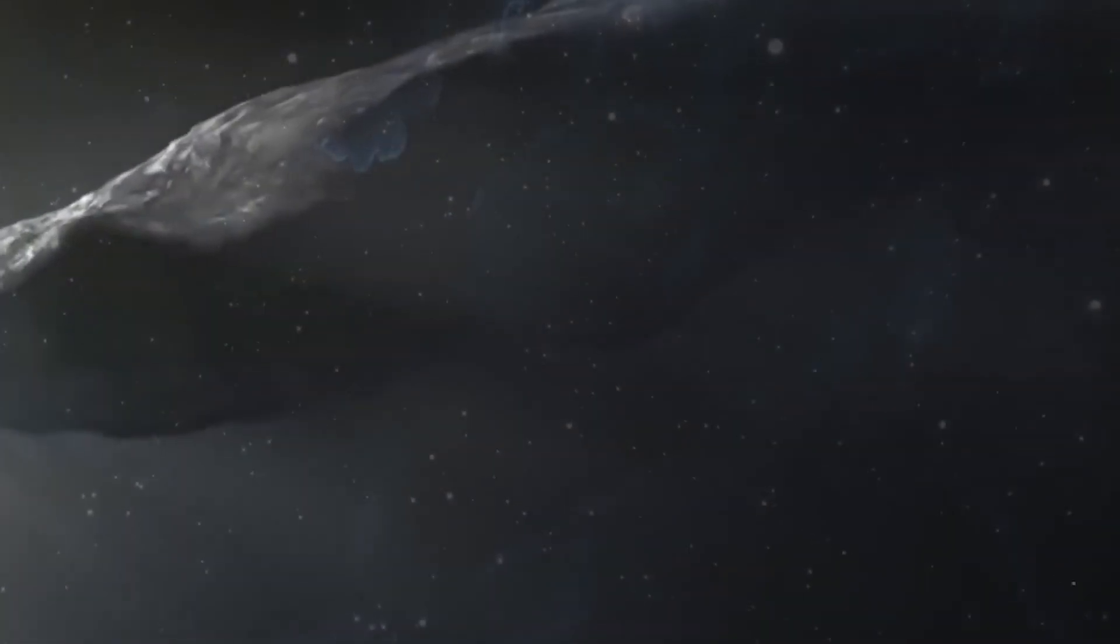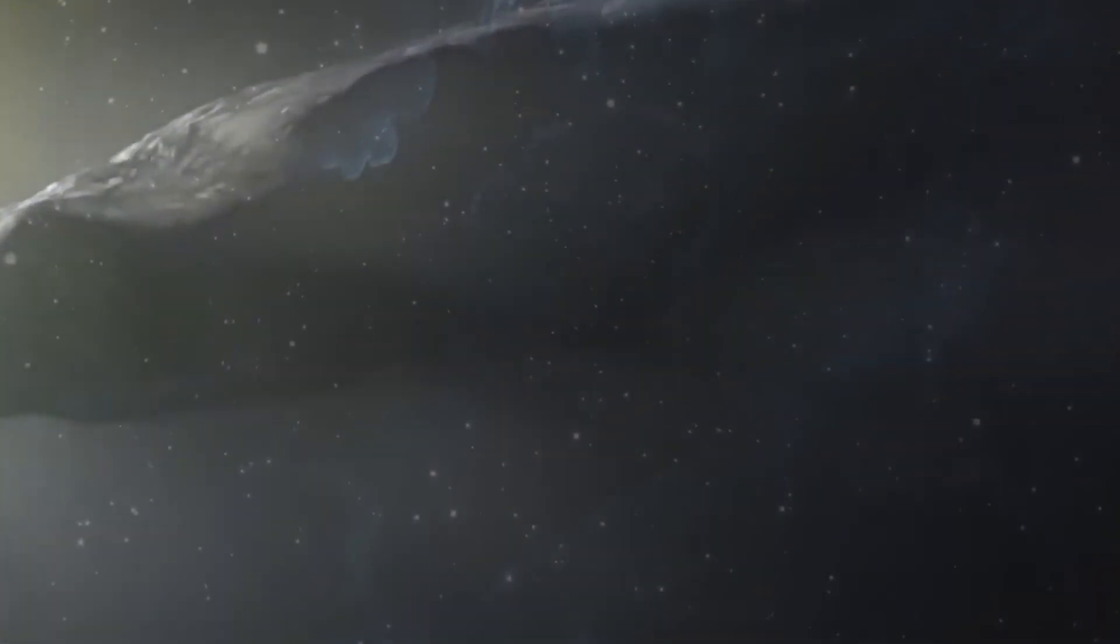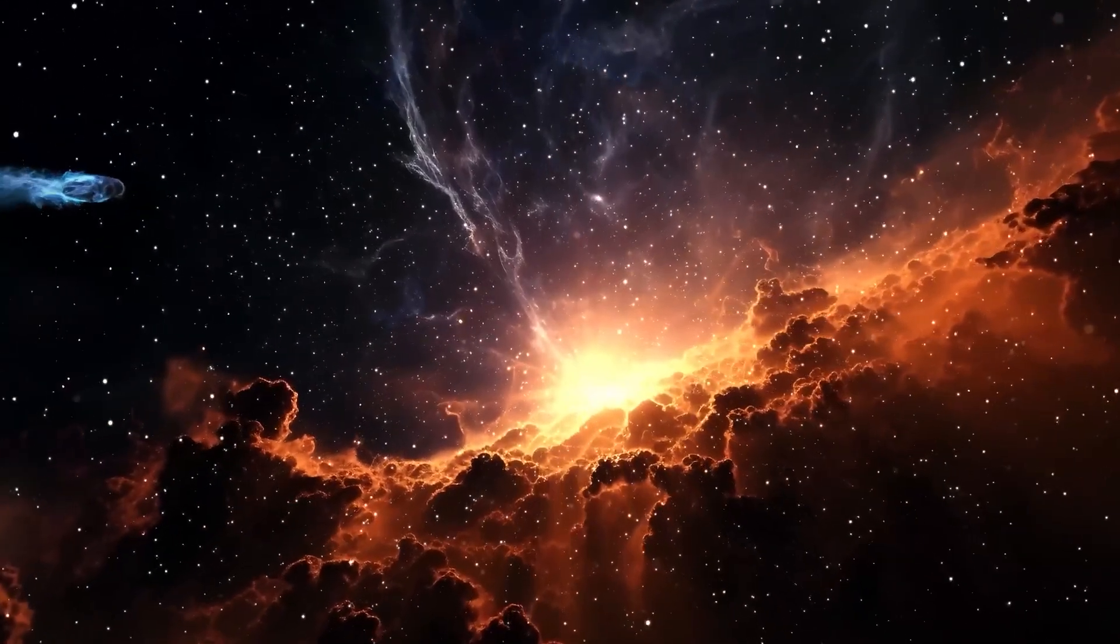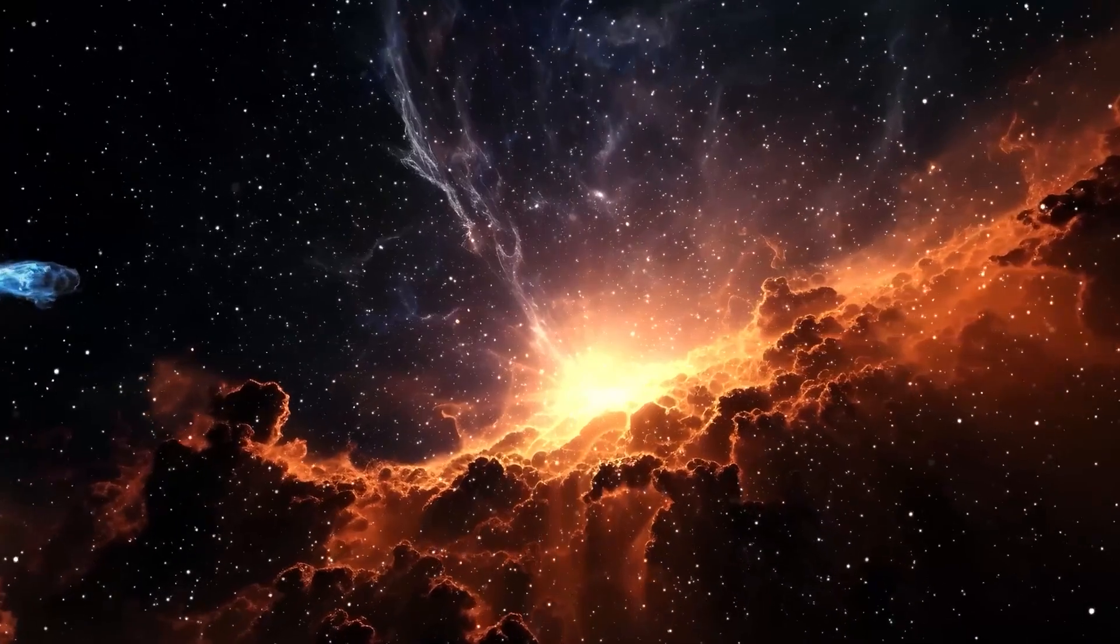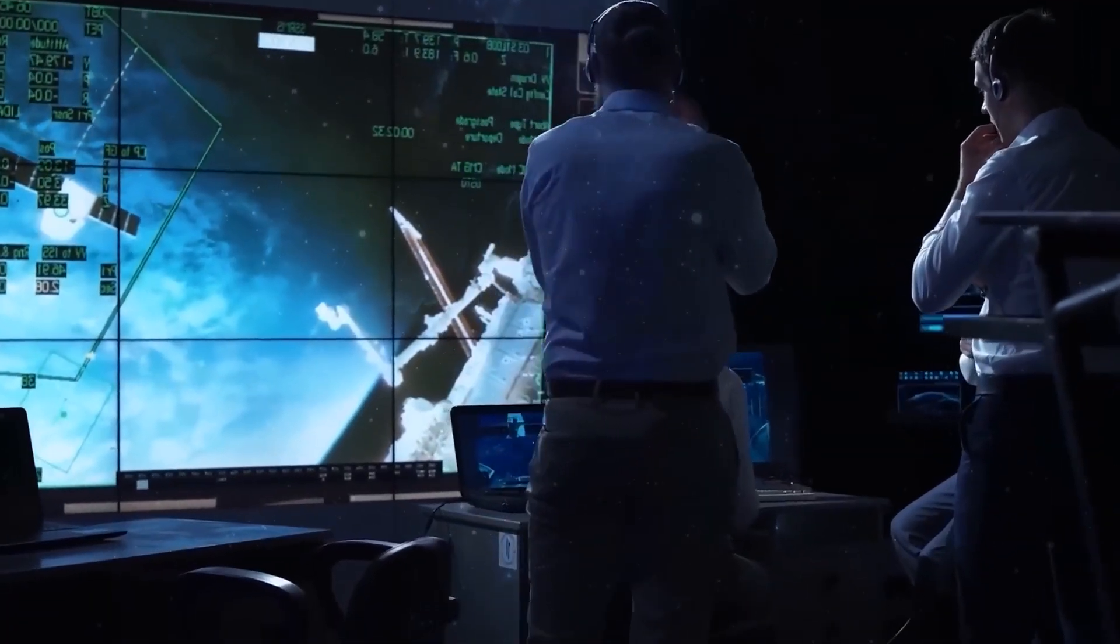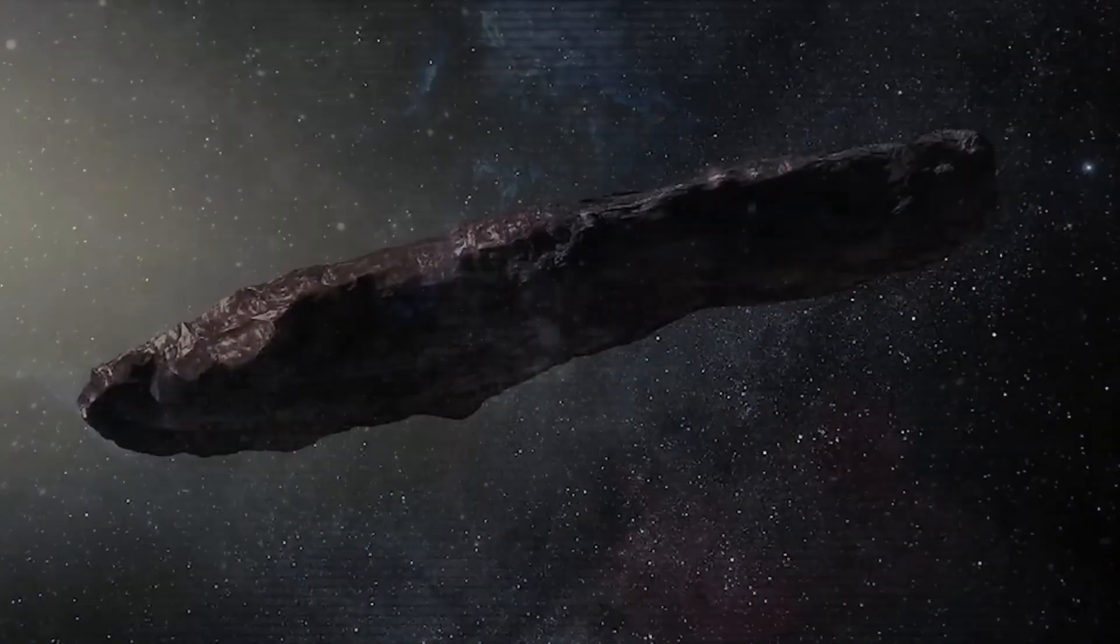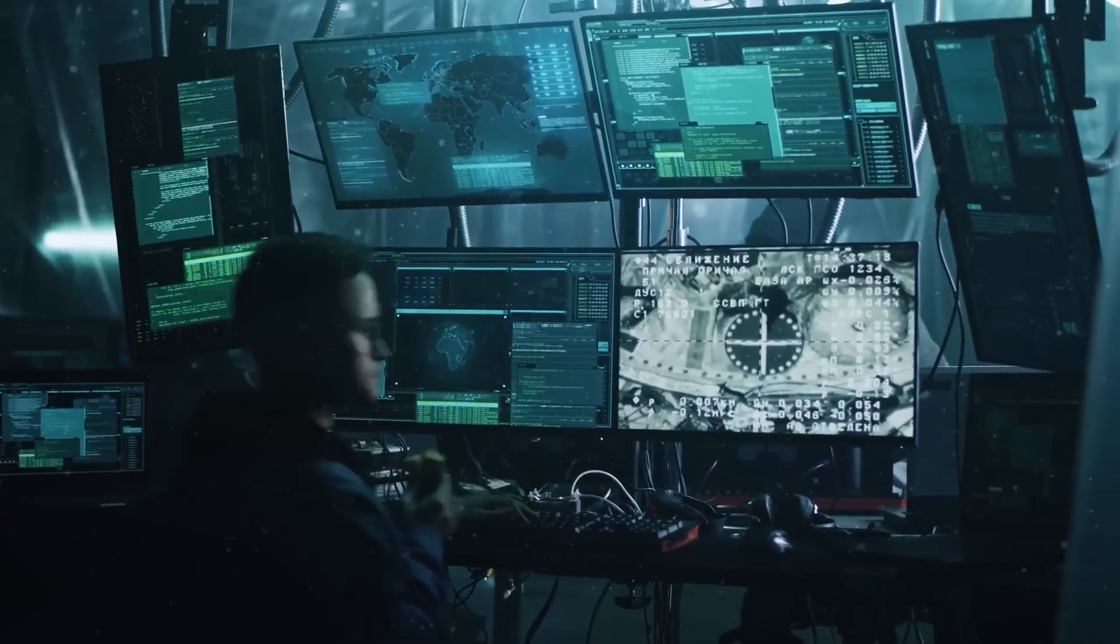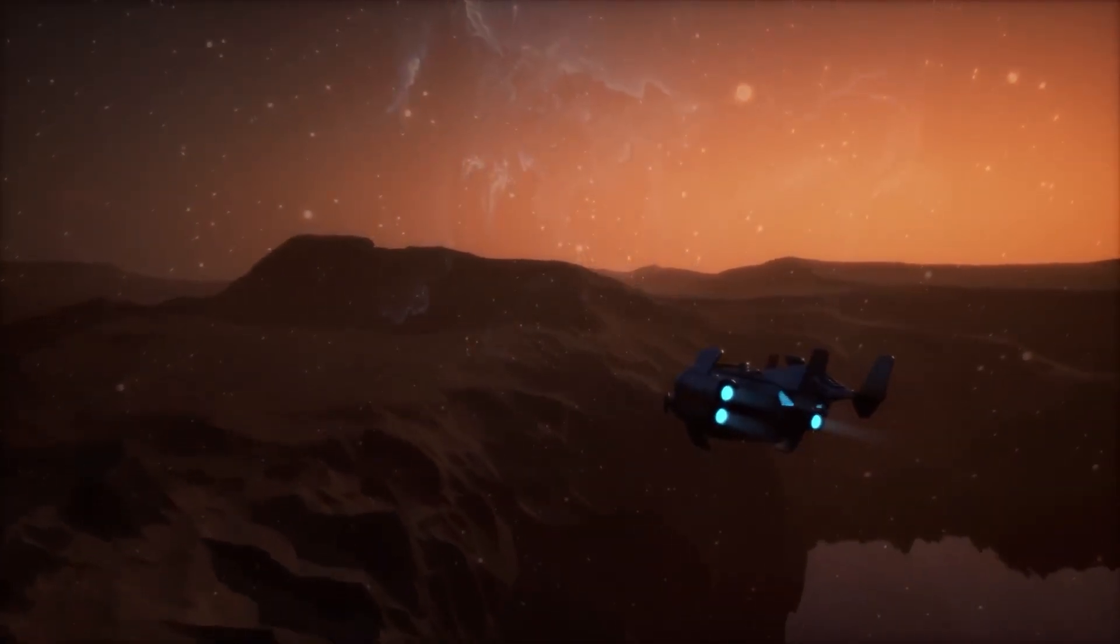It emerged from the depths of space and made the entire world stop in its tracks. As soon as the object was confirmed, everyone wanted to know more about it because nothing like this had ever been discovered before. This elongated cigar-shaped visitor arrived in our solar system from a distant realm beyond our own. It's basically a mysterious interstellar traveler venturing through the vastness of space to pay us a fleeting visit.